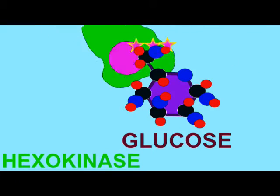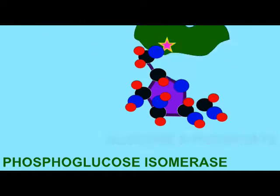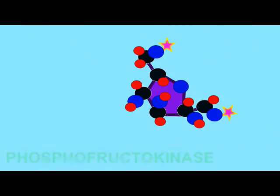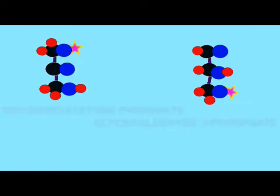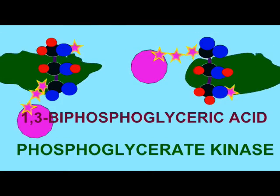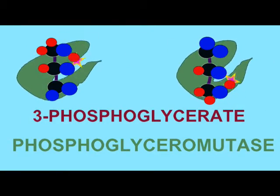And so glucose, for example, is broken in half through the process of glycolysis. This can occur throughout the cytoplasm. It doesn't require oxygen, and it releases a little energy.